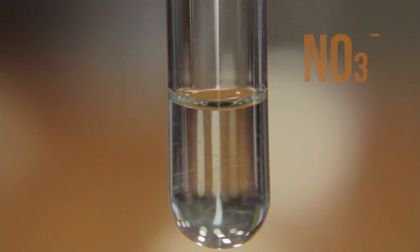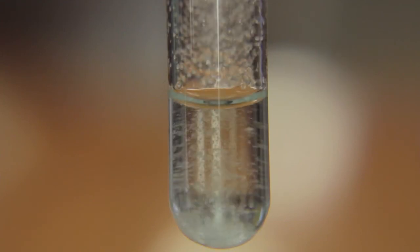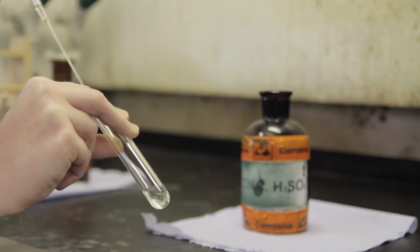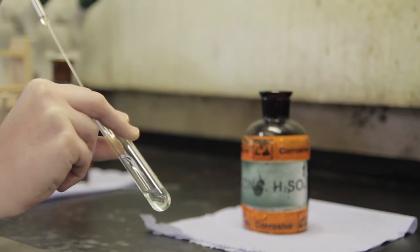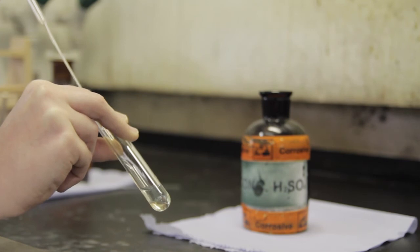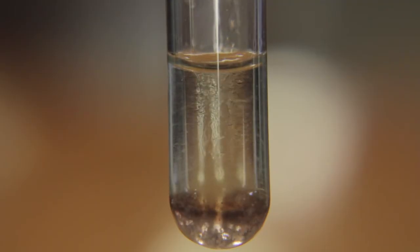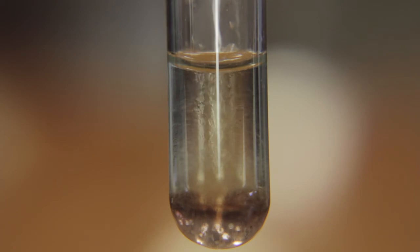The nitrate anion is acidified using dilute sulphuric acid. Solid ferrous sulphate is added and then working in the fume hood, the test tube is held at an angle and 4-5 drops of concentrated sulphuric acid are allowed to run down the side of the test tube. The formation of a brown ring confirms the anion is nitrate.